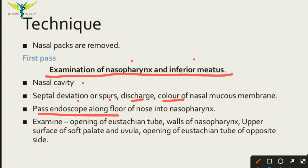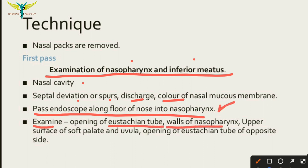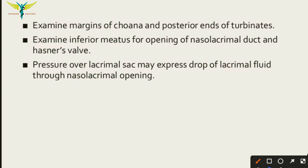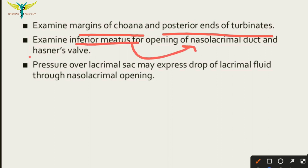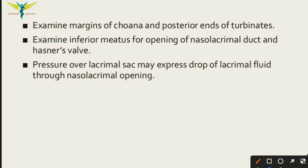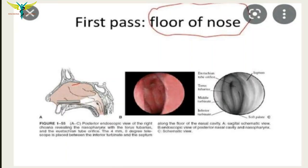In the first pass, the endoscope is passed along the floor of the nose into the nasopharynx. This allows examination of the opening of the Eustachian tube in the nasopharynx, the walls of the nasopharynx, upper surface of the soft palate, uvula, the opposite opening of the Eustachian tube, margins of the choana, posterior ends of the turbinates, the inferior meatus — which contains the opening of the nasolacrimal duct and Hasner's valve. Applying pressure over the lacrimal sac may express a drop of lacrimal fluid through the nasolacrimal opening.